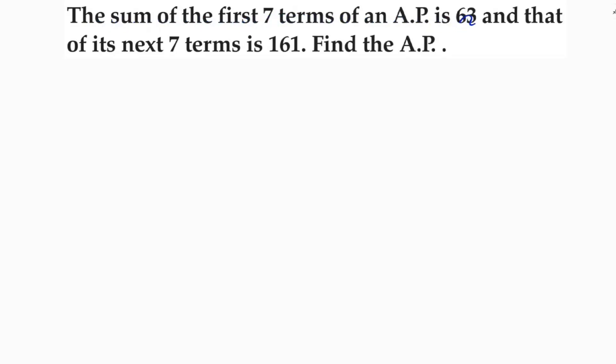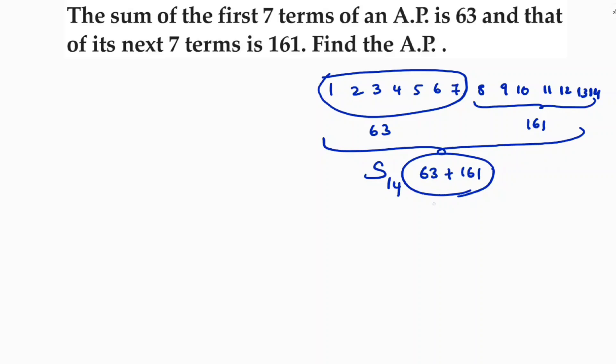The sum of first seven terms of an AP is 63 and that of its next seven terms is 161. Here see, 1 2 3 4 5 6 7 terms and next 7 terms means 8 9 10 11 12 13 14. So sum of first seven terms, if you add all these seven terms is 63. If you add the remaining seven terms that is 161. So it means clearly the sum of 14 terms, all the terms together is 63 plus 161.